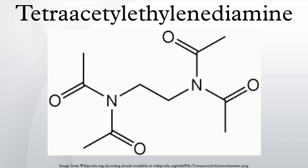Tetraacetylethylenediamine, commonly abbreviated as TAED, is an organic compound with the formula (CH₃CO)₂NCH₂CH₂N(COCH₃)₂. It is commonly used as a peroxide bleach activator in household detergents and for paper pulp. It is produced by acetylation of ethylenediamine. Although structurally and in abbreviation very similar to EDTA, the two compounds should not be interchanged.